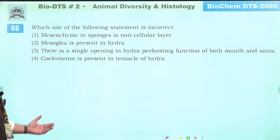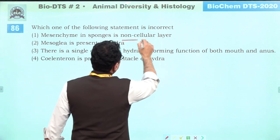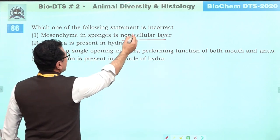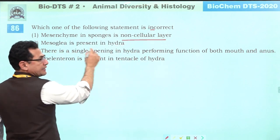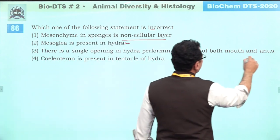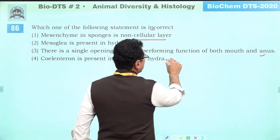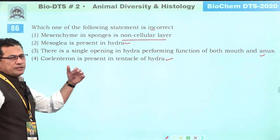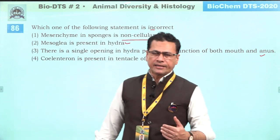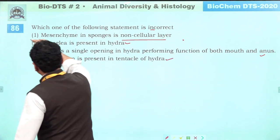Which statement is incorrect? Mesenchyme in sponges is non-cellular — incorrect, because the cells like archeocytes, thesocytes are present in mesenchyme, making it cellular. Mesoglea is present in hydra — correct. Single opening in hydra serving as mouth and anus — correct. Cnidoblast in tentacles of hydra — correct. So answer is one: mesenchyme in sponges is not non-cellular.